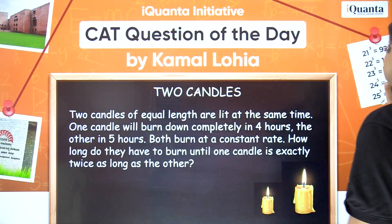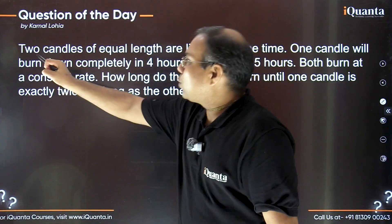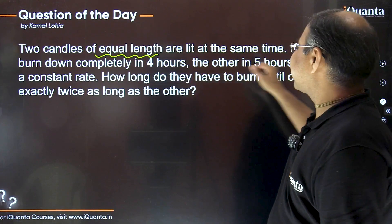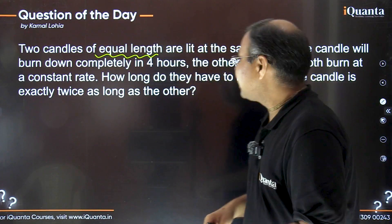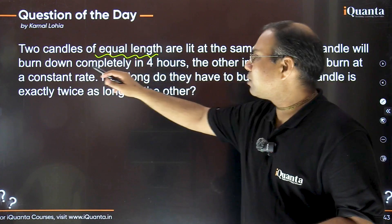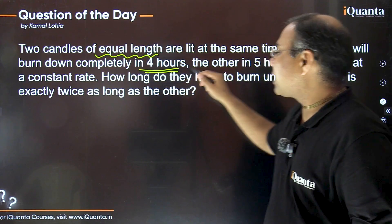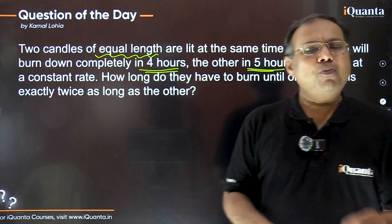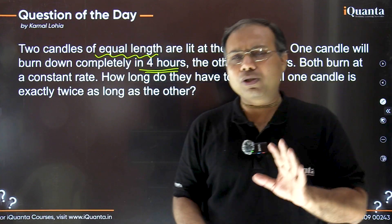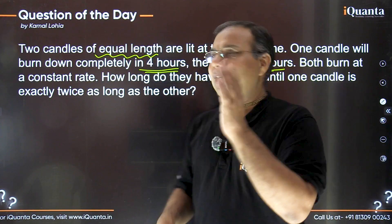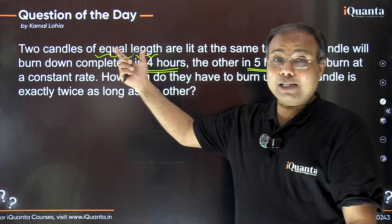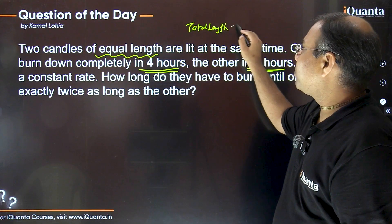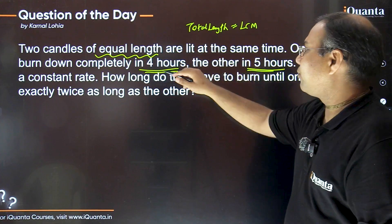Let's make it simple and solve it together. The problem says: two candles of equal length are lit at the same time. One candle will burn down completely in four hours and the other in five hours. The first step to keep things simple is to assume the total length of each candle equal to the LCM of the two numbers — four and five — because these are the different burning times.